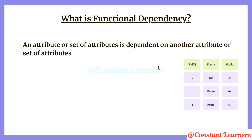Let's get started. What is functional dependency? When an attribute or a set of attributes is dependent on another attribute or set of attributes, we say that functional dependency exists. Functional dependency is denoted as X determines Y — that is, Y is functionally dependent on X. Y is the dependent attribute and X is the determinant, because we are determining the values of Y using the values of X. For example, roll number is determining name, or name is functionally dependent on roll number.